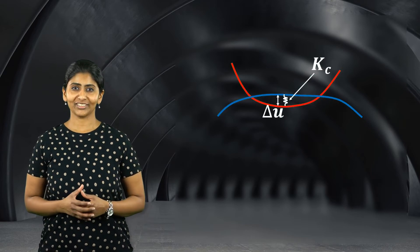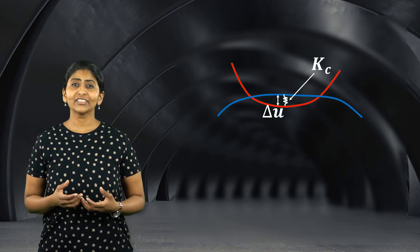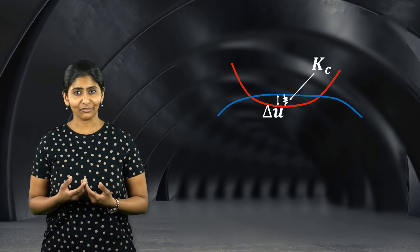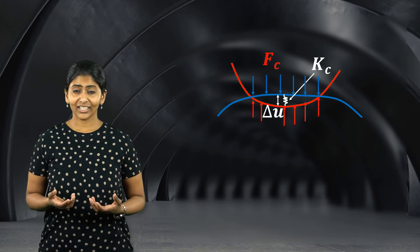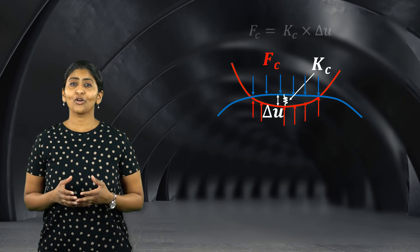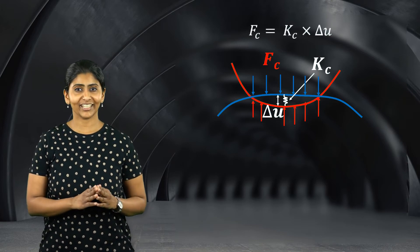This delta u is the amount by which the contact spring gets deformed and thus develops a restoring force Fc given by the product of the contact stiffness Kc and the penetration delta u.